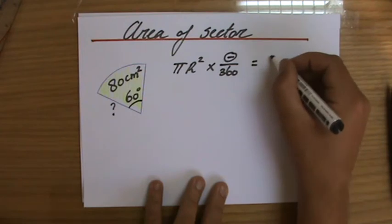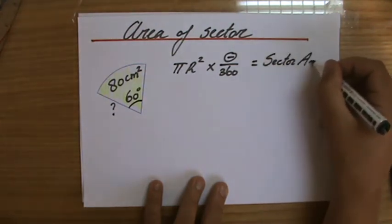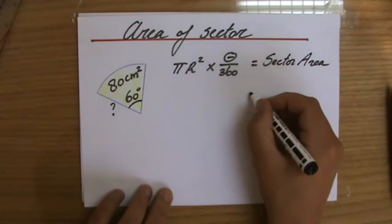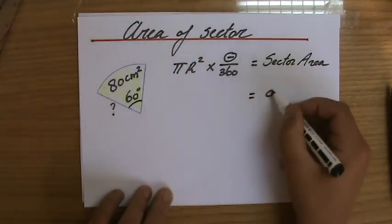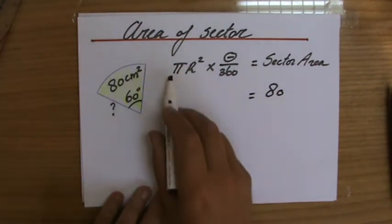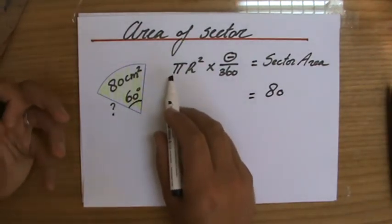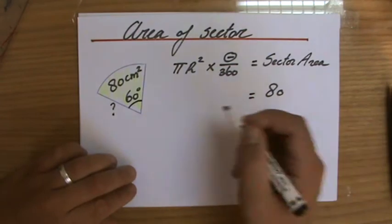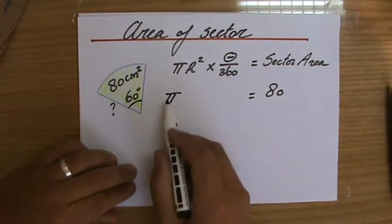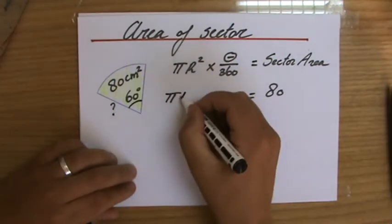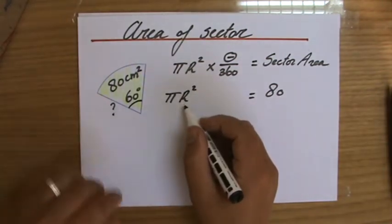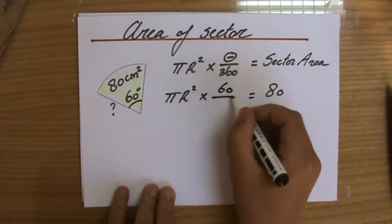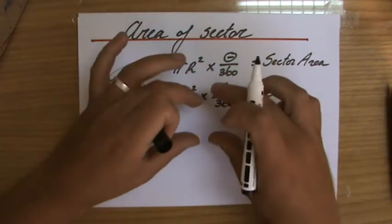Let me write it down - the sector area. In this particular case what is the sector area? That is 80. π, it's a number we don't know exactly but we're pretty close to it, it's in your calculator 3.1415 and more decimals, but that is not a variable. r squared - r is the question, what is the radius? Times which angle? 60 out of 360.